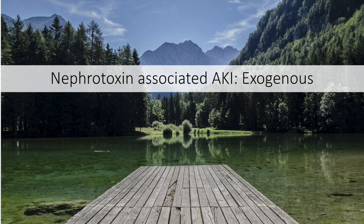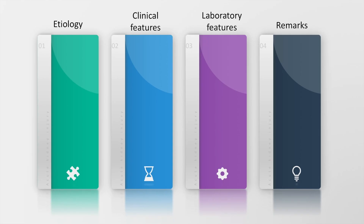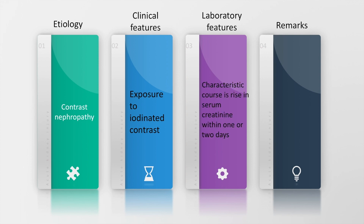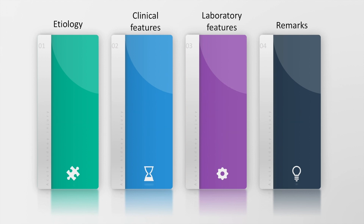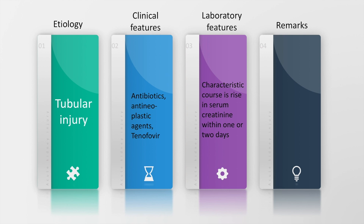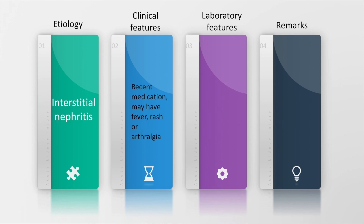Acute kidney injury may also be caused by exogenous nephrotoxins. Causes include contrast nephropathy, where the patient may have undergone a contrast-enhanced CT scan, with a characteristic rise in serum creatinine within 1 to 2 days and a fractional excretion of sodium generally less than 1%. Tubular injury due to anti-neoplastic agents, antibiotics, and tenofovir may also cause a rise in serum creatinine over 1 to 2 days, with a fractional excretion of sodium again less than 1%.